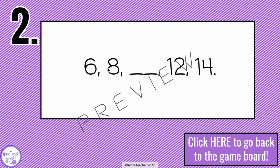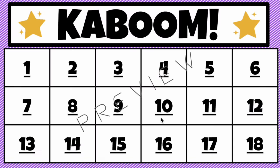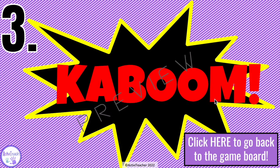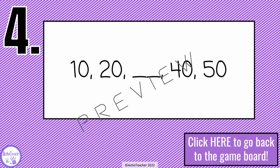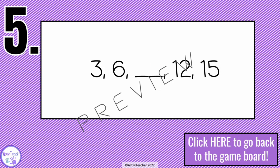For example, the sequence six, eight, ten, twelve, fourteen means the answer is ten. If the next team picks number three and gets a Kaboom, that team loses their turn.